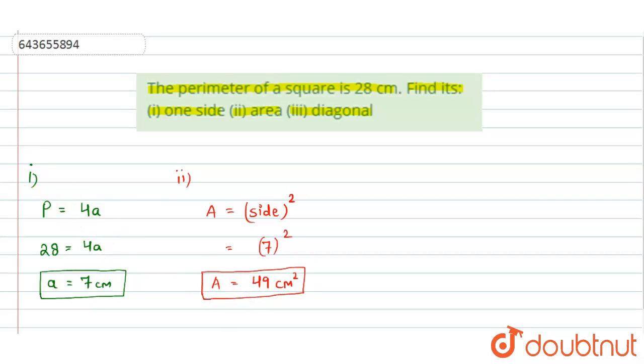And at the end, for the third part, we have to find the length of the diagonal. The length of the diagonal of a square is given by root 2a, where a is the side of the square. So here the length of the diagonal will be equal to root 2 into a, which is 7.